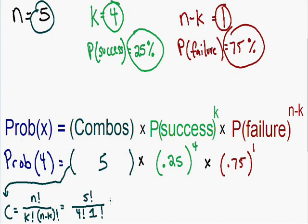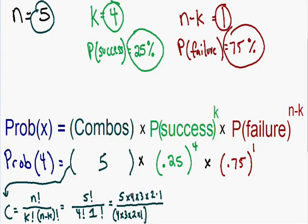If you don't know what factorial means, five factorial just means five times four times three times two times one. This is all divided by four factorial, which is four times three times two times one, multiplied by one factorial, which is just one. If you plug all this into your calculator, you get our total number of combinations, which is five.